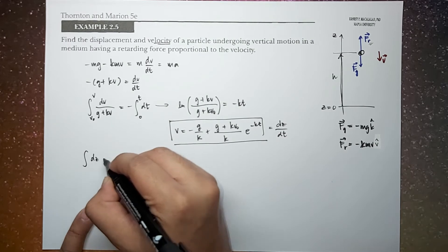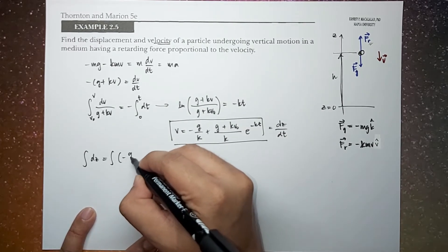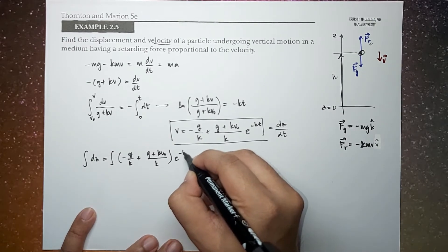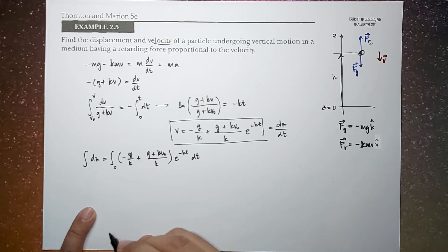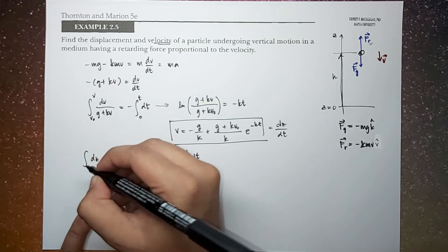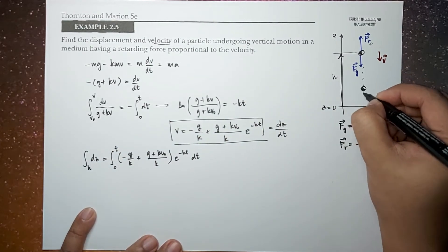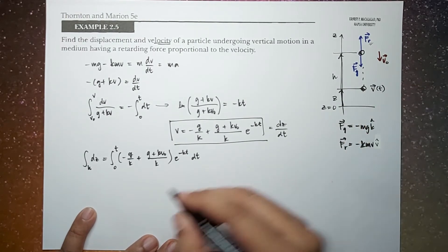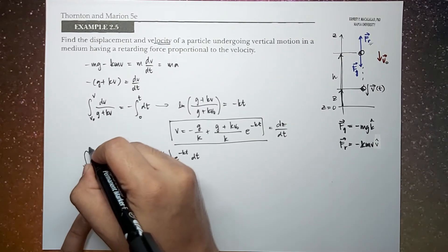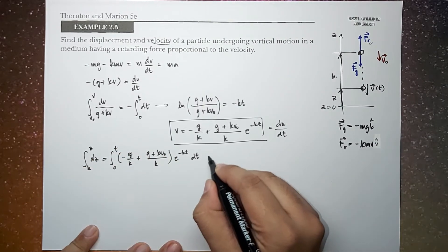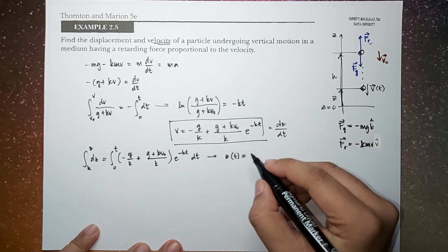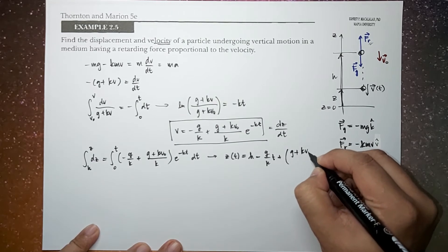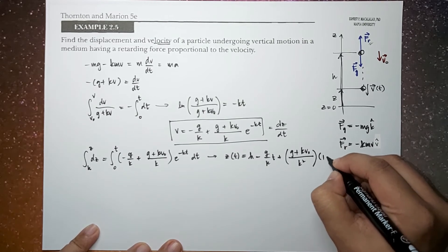Doing the integration again, we have the integral of dz equal to the integral of (negative g over k) plus (g plus kv-naught) over k times e to the negative kt, all dt. Using the initial condition — at time equal to zero the position is h, and at later time t the position is z — integrating this whole expression, we end up with: z as a function of time equals h minus (g over k)t plus (g plus kv-naught) over k-squared times (1 minus e to the negative kt).